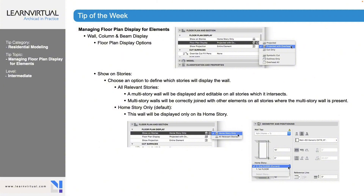When managing the floor plan display limit for walls, you can also set projective, projective overhead, or cut only — these also influence how the window shows. When you choose on stories or all relevant stories, you're setting whether you want that wall to show on all stories. For example, if you have a wall that goes up 30 feet and want it to show on all stories, select all relevant stories so it continues on the second and third floors, and moving it on one floor moves it on all others.